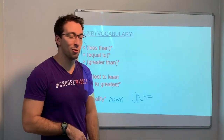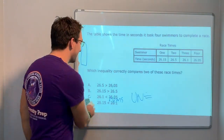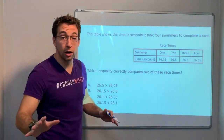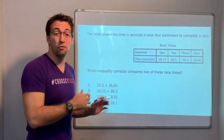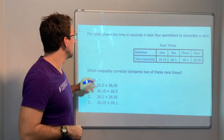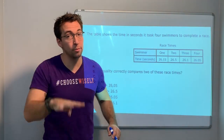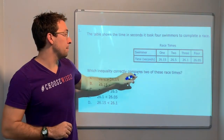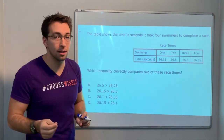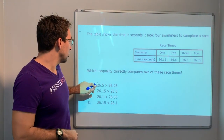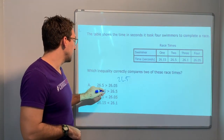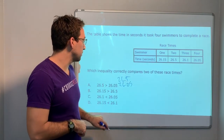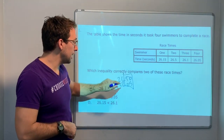Into the practice problems. Remember, you can pause, solve the problem, and then check your answer with the video. The table shows the time in seconds it took for four swimmers to complete a race. Which inequality correctly compares two of these race times?